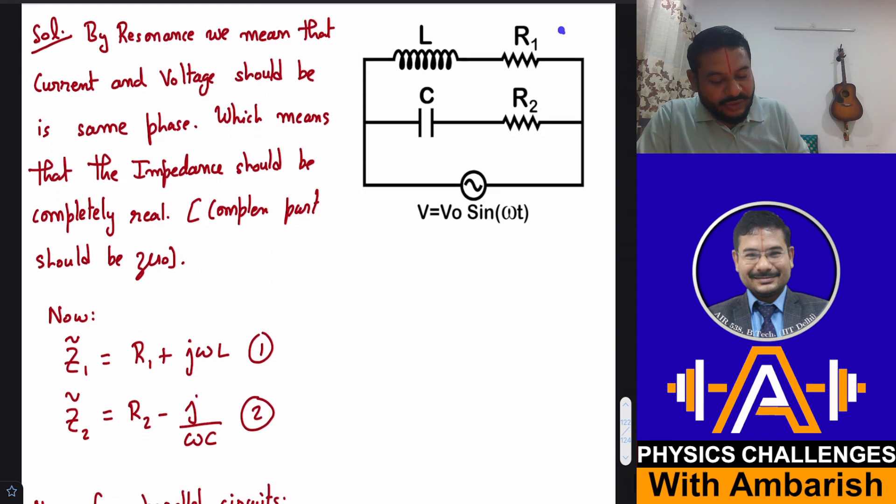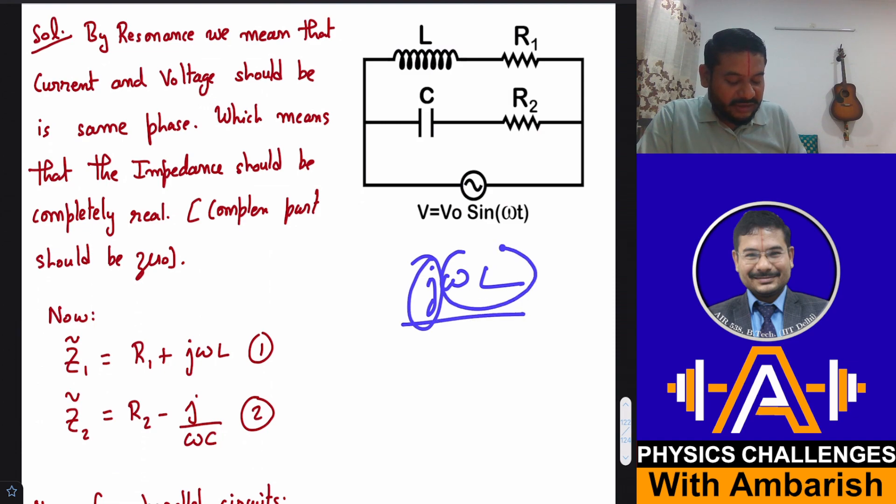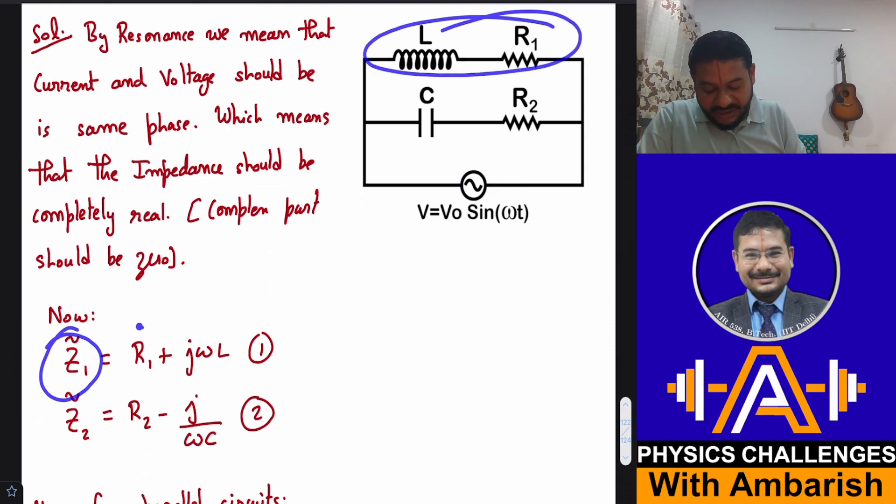So now let's look at the complex impedance of this branch. So all of you might be aware that an inductance has got complex impedance given by J omega L where J is iota and omega L is obvious. So Z1 of the top branch is simply R1 plus J omega L. There are two impedances in series. So J omega L for this and R1 as it is.